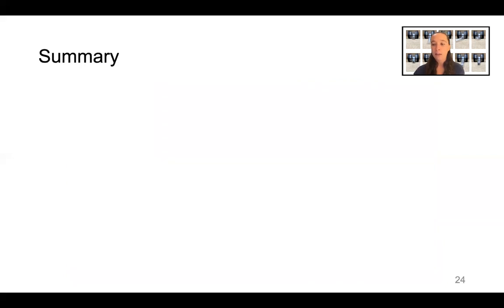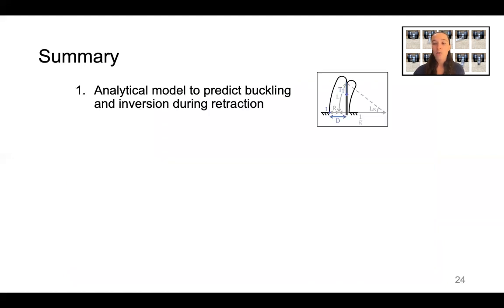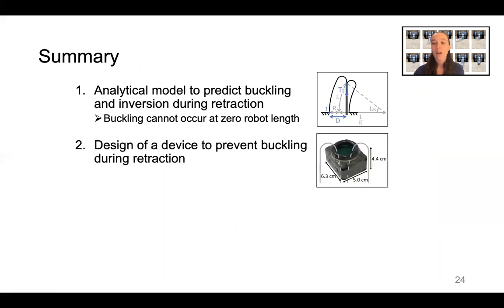In summary, in this work, we presented a new analytical model to predict buckling and inversion during retraction. The key takeaway from that model was that buckling cannot occur at zero robot length. We also presented the design of a device to prevent buckling during retraction. This device functions by reducing the effective robot length for the purpose of retraction to zero.